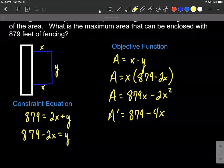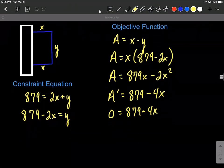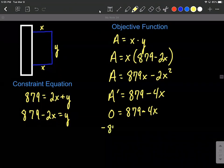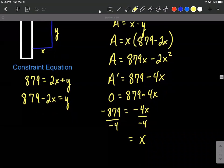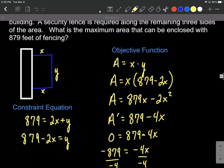Now we're going to find critical values or critical numbers by figuring out when the derivative is equal to zero or undefined. In this case, let's set it equal to zero. So 879 minus four X equals zero, and then solve this for X. First subtract the 879, that leaves us with negative four X. To get X by itself, divide both sides by negative four. That gives us X equals 219.75 feet.